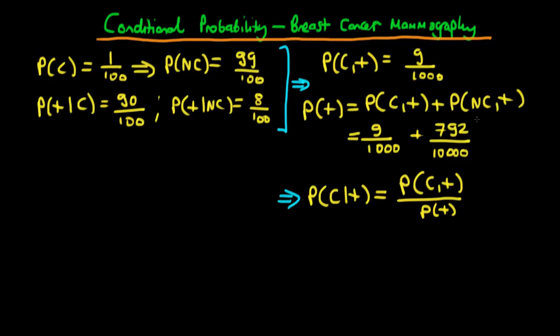At the end of the last video, we worked out the probability that an individual has cancer and they test positive, this joint probability at the top, as 9 over 1,000.